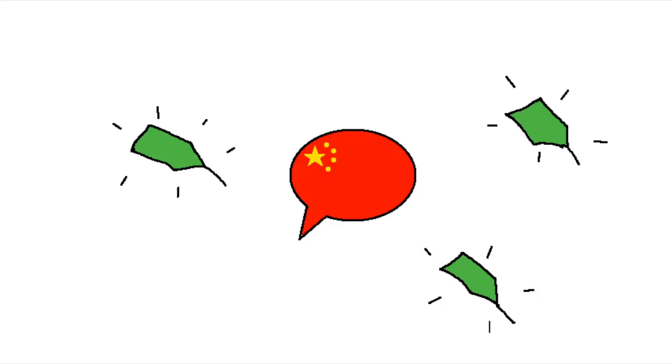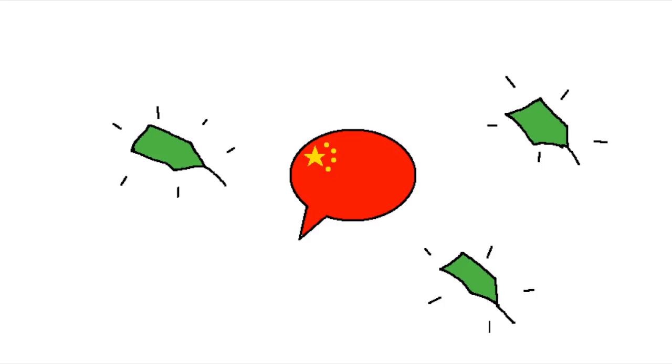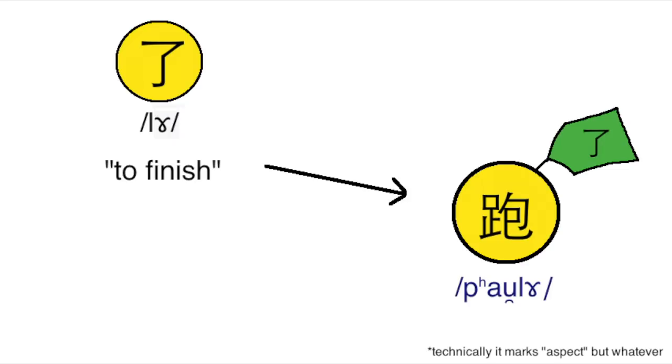It happens when separate words that used to carry grammatical information combine with the word they're describing. Chinese, for example, seems like it might be starting to develop some new inflectional morphology for the first time in a long while. This word used to be a normal verb that meant to finish, but these days people are using it as a suffix that you attach to the end of a verb to mark its tense.